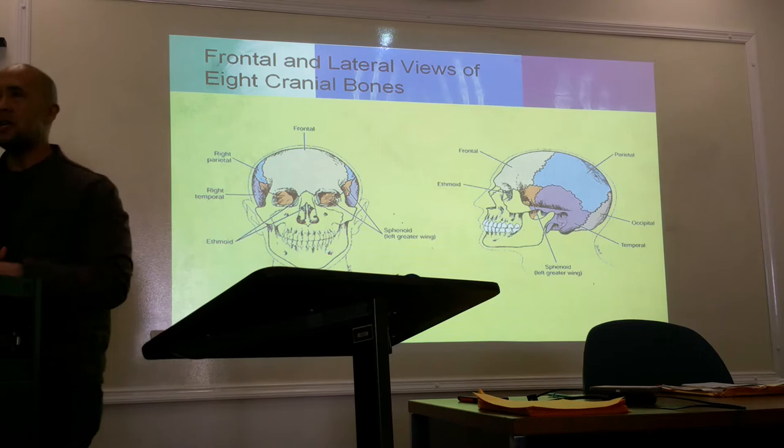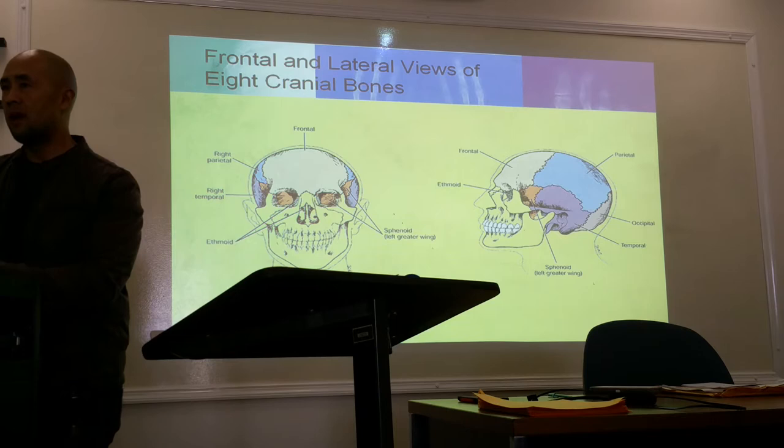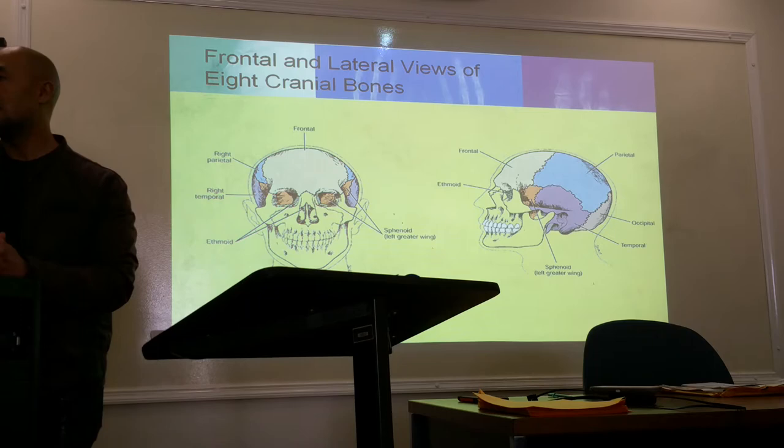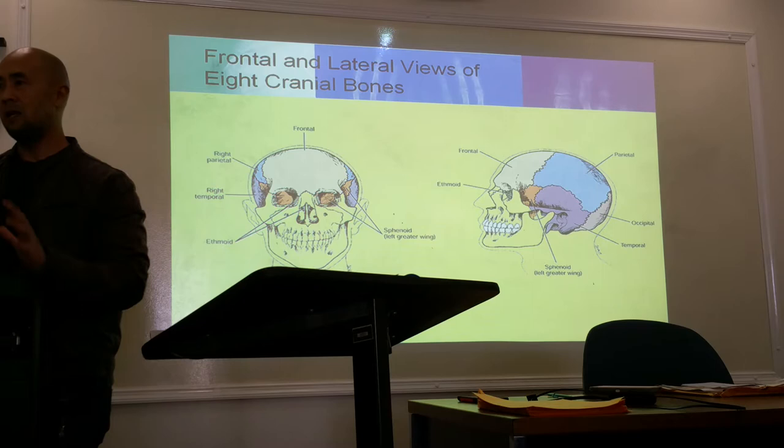The eight cranial bones include one frontal, two parietals, one occipital, two temporals, one sphenoid bone, and one ethmoid bone.